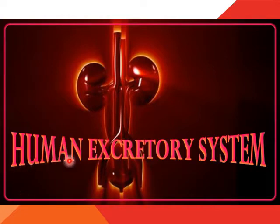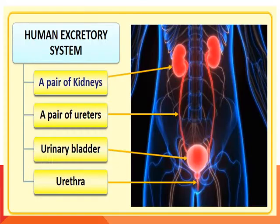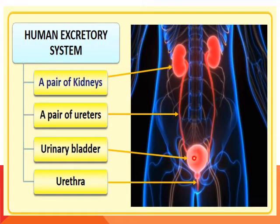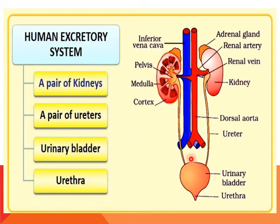The human excretory system consists of a pair of kidneys, a pair of ureters, a urinary bladder, and a urethra. We will now discuss each of these components one by one.